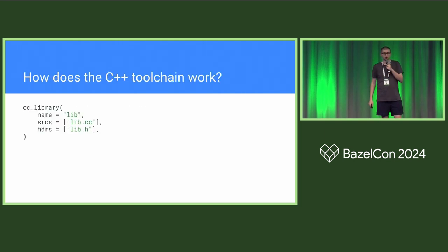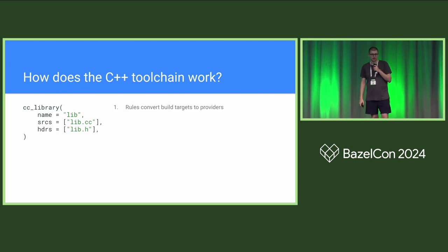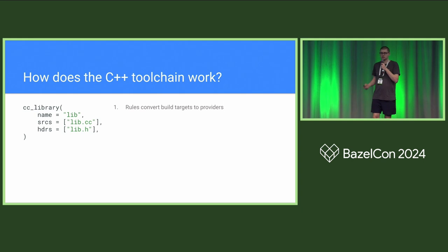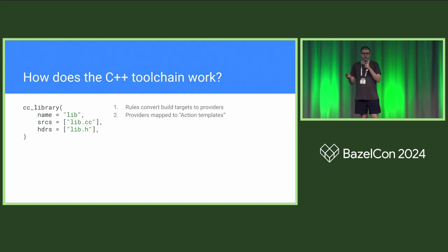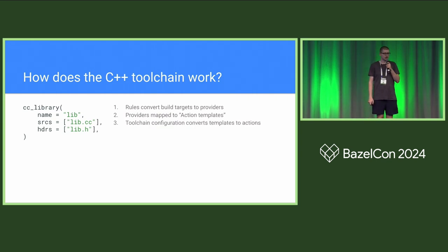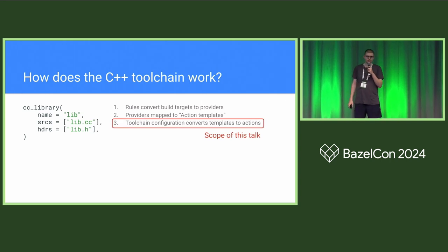So how does C++ toolchains work? We start off with a CC library, and the very first thing that happens is we turn that into a CCinfo provider — that's done by the CC library rule. Next, the CCinfo provider is converted into action templates. These action templates are not necessarily a one-for-one mapping; a CC binary is going to have both a link action template and a compile action template. Finally, the action templates are combined with your toolchain configuration to get an actual action. We're specifically going to be talking about how to define toolchain configuration easily.